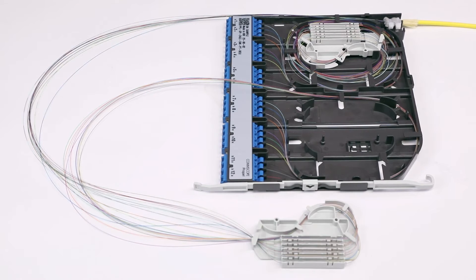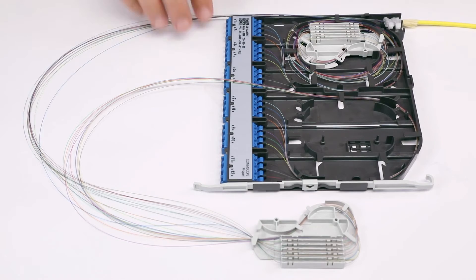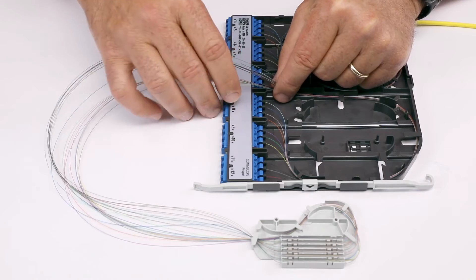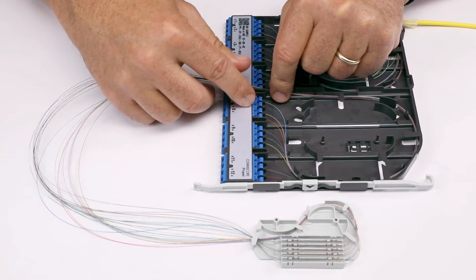Position spool of fibers 13 through 24 as shown to prepare for routing. Pay extra attention to the routing of the feeder strands 13 through 24.